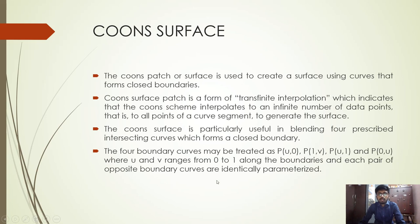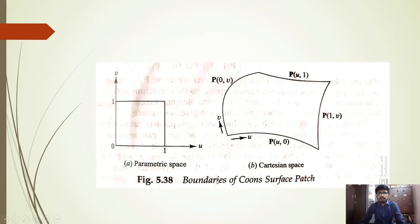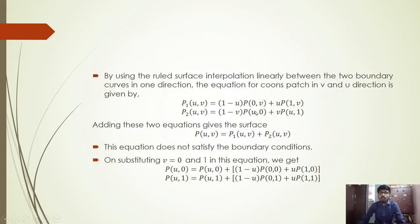Each pair of opposite boundary curves are identically parameterized. Using ruled surface interpolation linearly between two boundary curves, the equation of the Coons patch in V and U directions is derived. The first equation represents the Coons patch in the V direction, with 1−U and U as linear functions: P₁(U,V) = (1−U)·P(0,V) + U·P(1,V). The second equation in U direction is: P₂(U,V) = (1−V)·P(U,0) + V·P(U,1).